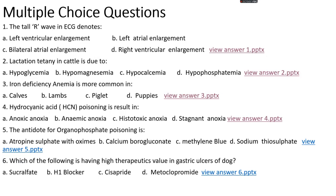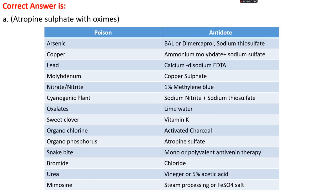Question number 5. The antidote for organophosphate poisoning is: options A, atropine sulfate with oxime; options B, calcium borogluconate; options C, methylene blue; options D, sodium thiosulfate. The right answer is option A, atropine sulfate with oxime.